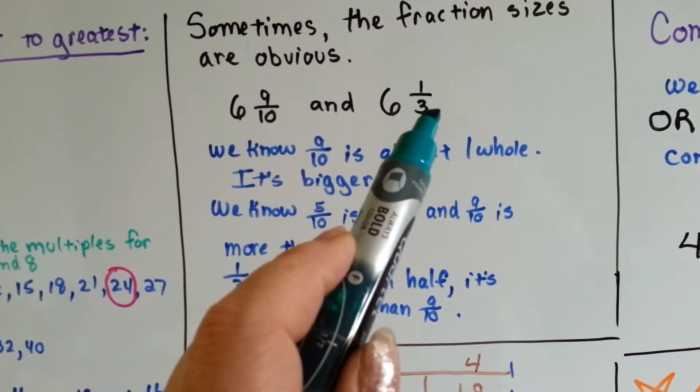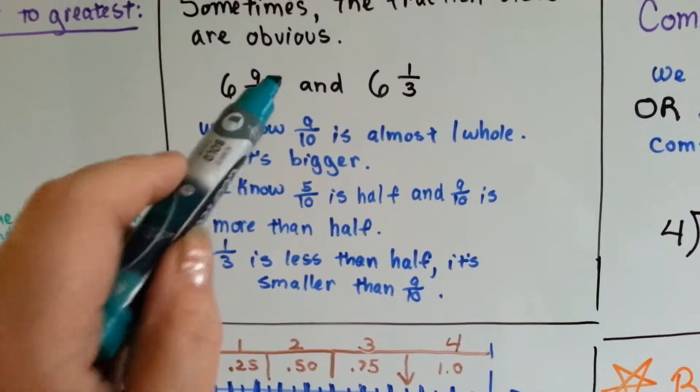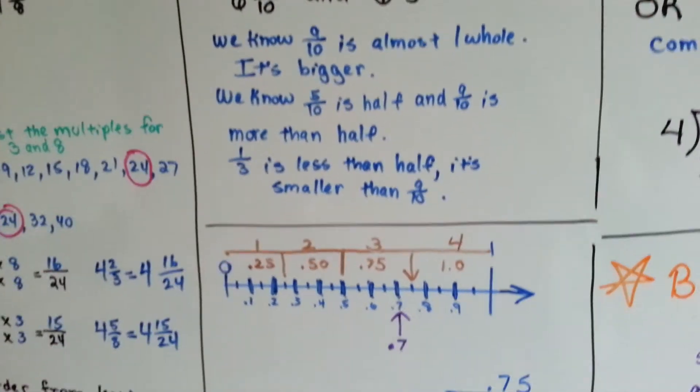They have the same whole number, and this one's not as big as a half, and this one's bigger than a half, that one's got to be bigger. So we can use the halfway mark. That's a benchmark to help us.